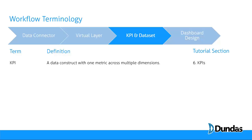KPIs is a named term in Dundas. It is a specific data construct that has one metric and multiple dimensions — for example, sales over time or calls per region. You'll be building KPIs so that you can then visualize them, covered in Section 6. In contrast, there are datasets: tabular groups of data with multiple columns that can be in any format, used in things like maps and tables. You'll learn about those in Section 7.